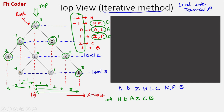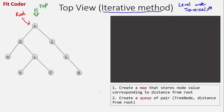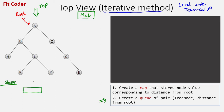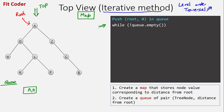Now let's see the pseudo code. The first step is to create a map that stores node value corresponding to distance from the root. The second step is to create a queue of pairs of tree node and distance from the root. These are the two data structures required: a map and a queue. We push root comma zero into the queue, so we push A comma zero.